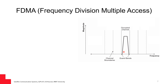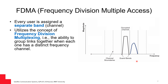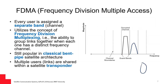Frequency division multiple access is the simplest method. You have the entire band, as you can see in the figure, and you divide this band into sub-bands or sub-channels and assign users. You need to keep guard bands between the users so they will not cause interference to each other. The benefit is it's easy to implement and provides an easy method for traditional bent pipe architecture, where a transponder with, say, 70 MHz total bandwidth is divided into multiple smaller channels. The drawback is that you cannot divide it too much, because the guard bands will eat up your efficiency.